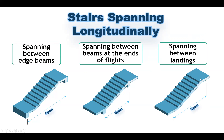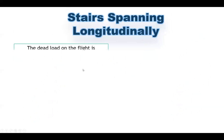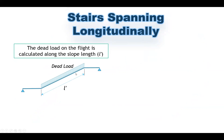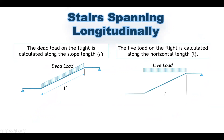The middle part takes the load to the landing, and the landing takes it to the columns. Before going into more details on each type, let's discuss loads. When calculating the dead load on the flight part, we must consider the slope length L'. For the dead load, we multiply the loads by this inclined or slope length to get the resultant load. However, the live load on the flight is calculated along the horizontal direction.